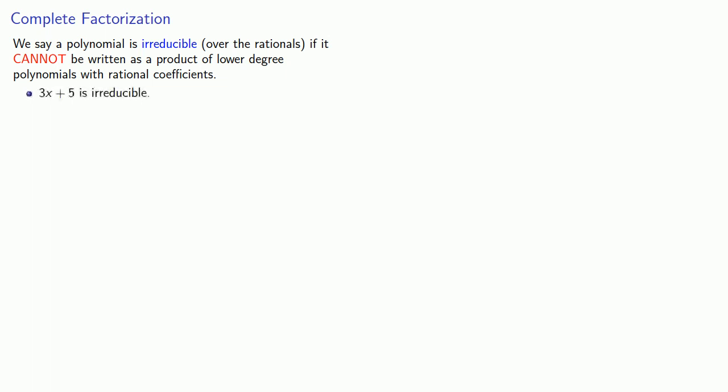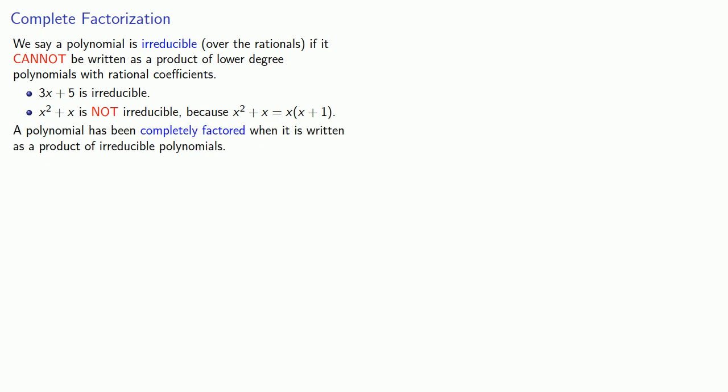Well, how do we know when to stop? We say a polynomial is irreducible over the rationals if it cannot be written as a product of lower degree polynomials with rational coefficients. So 3x + 5 is irreducible. x² + x is not irreducible because x² + x is x times x + 1. We say that a polynomial has been completely factored when it is written as a product of irreducible polynomials.